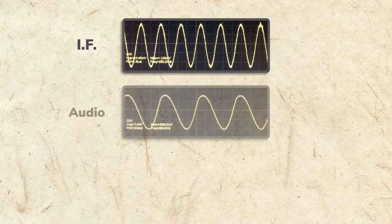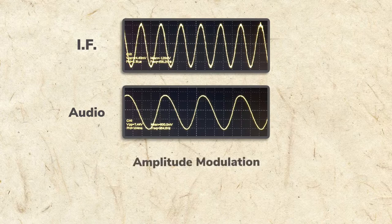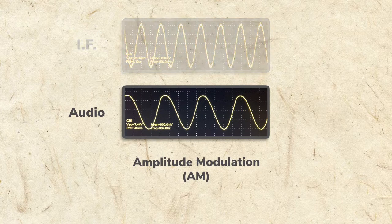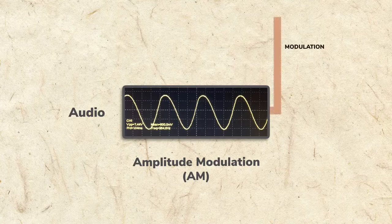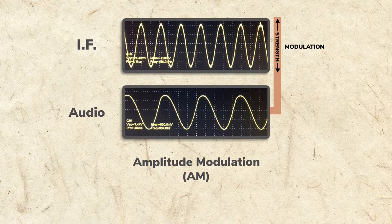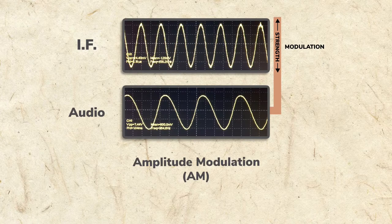Encoding the IF with the audio is done using amplitude modulation, or AM. This means that the audio signal modulates, or changes, the amplitude of the IF radio signal. This is easily seen on the oscilloscope.